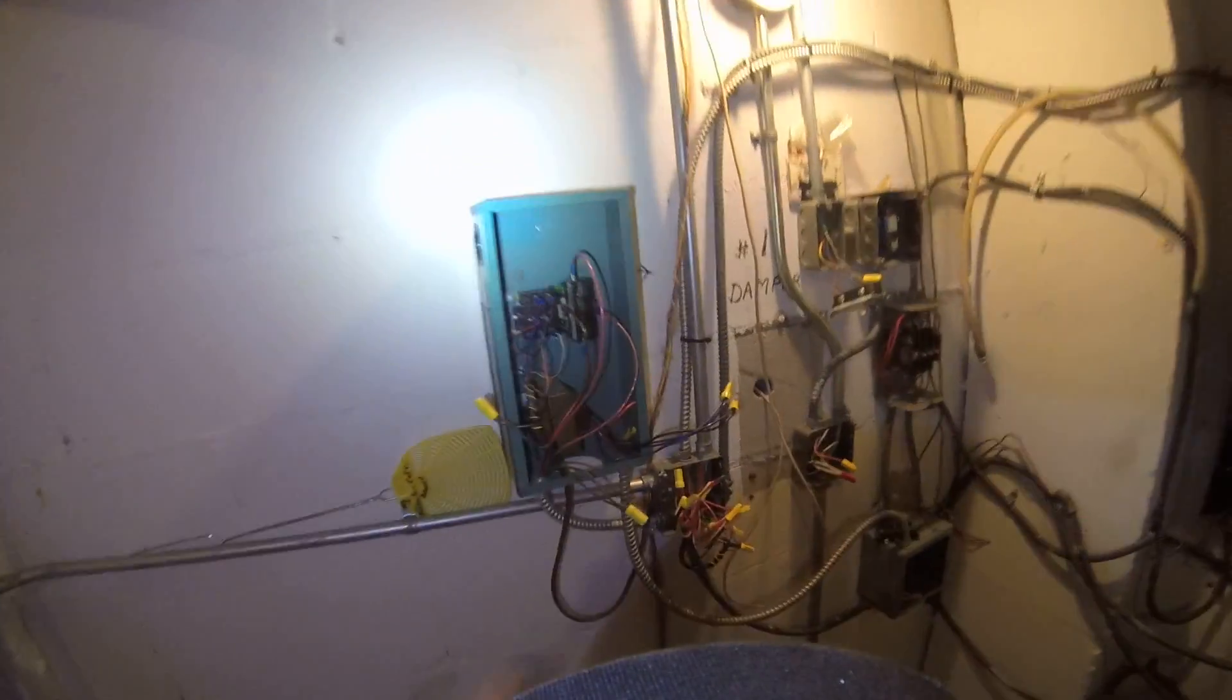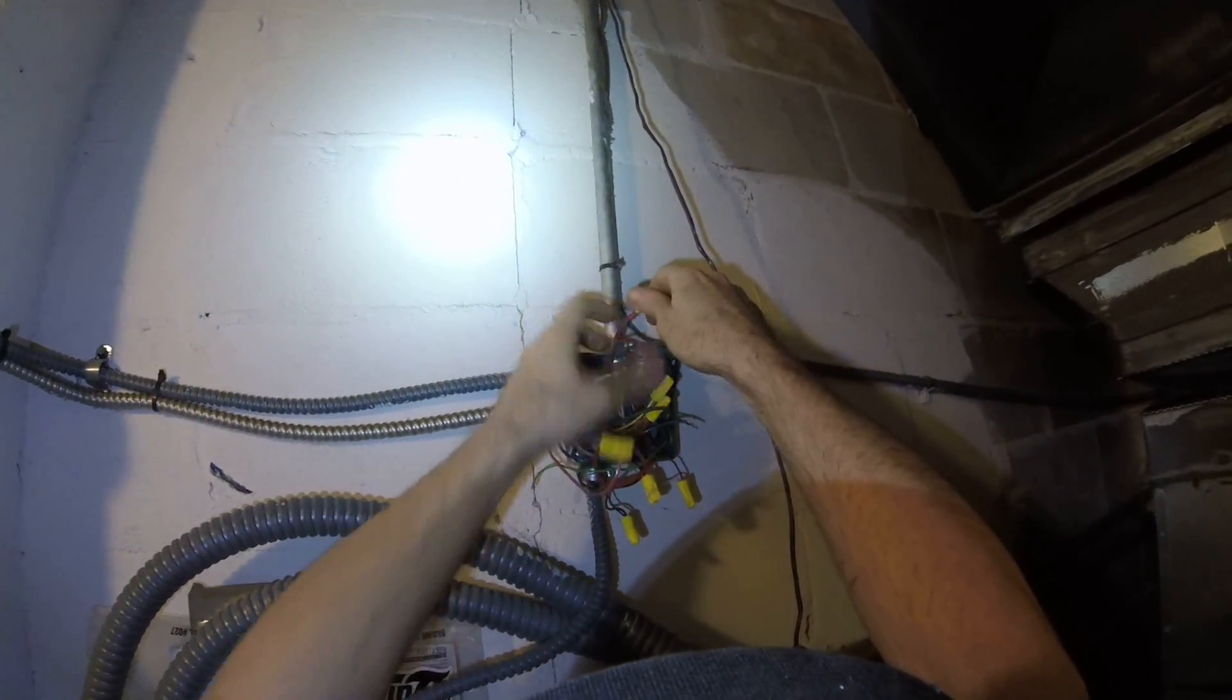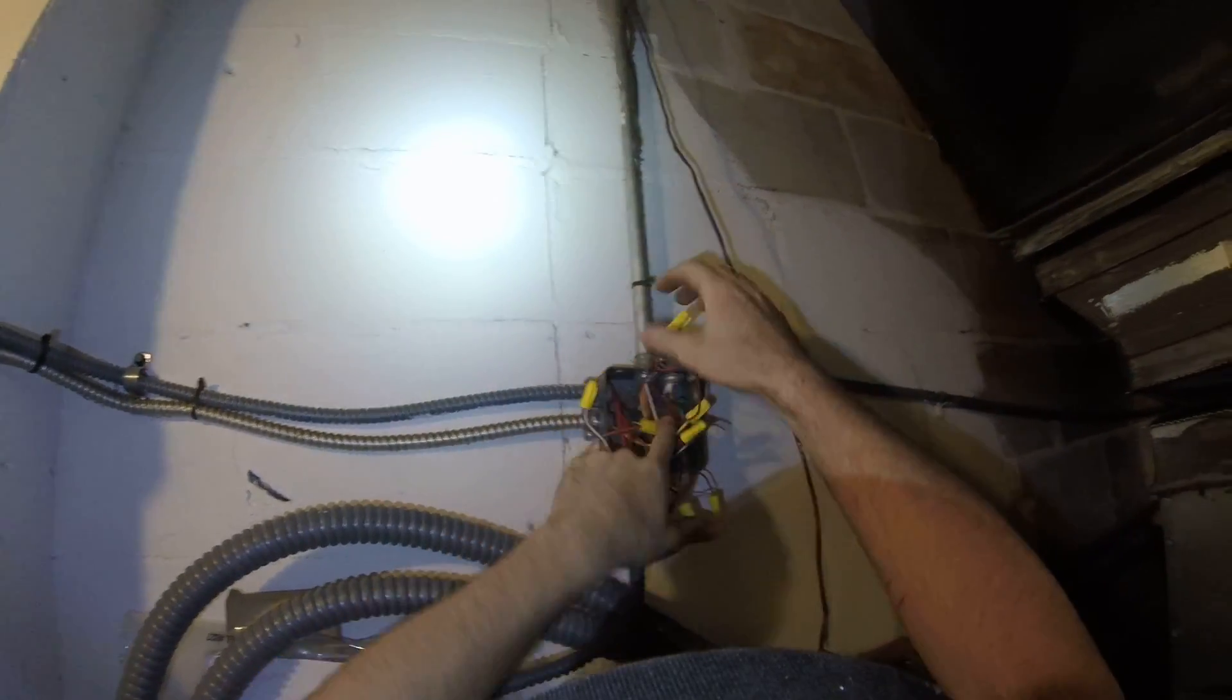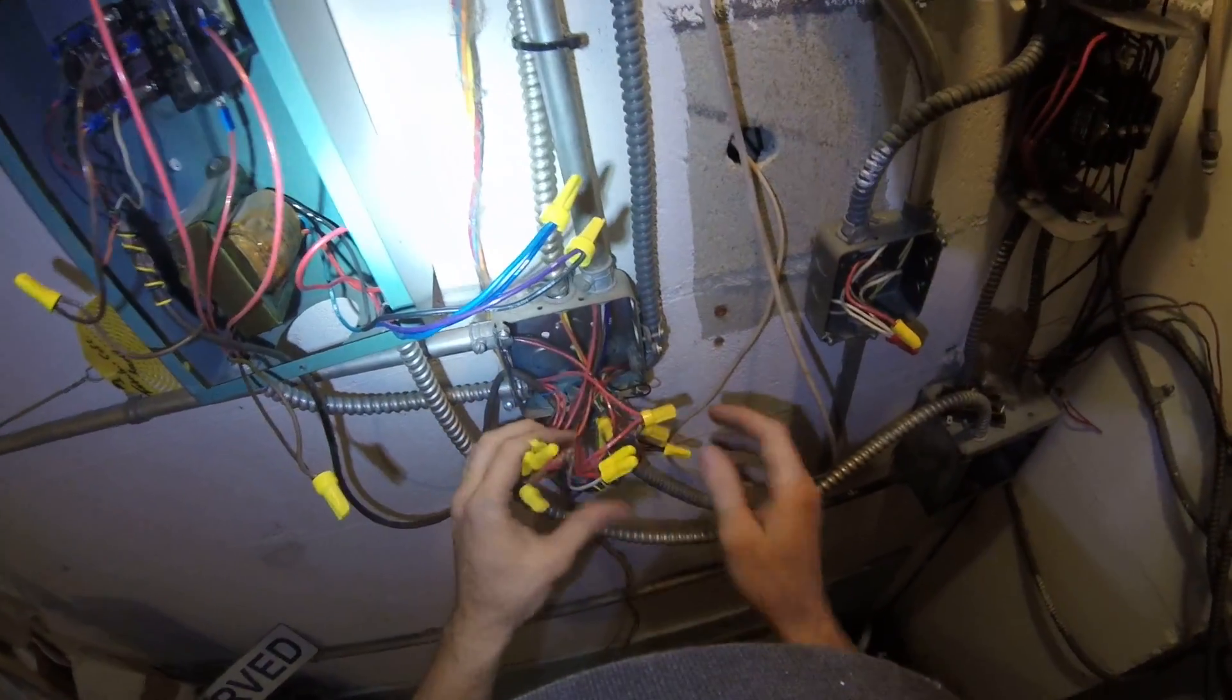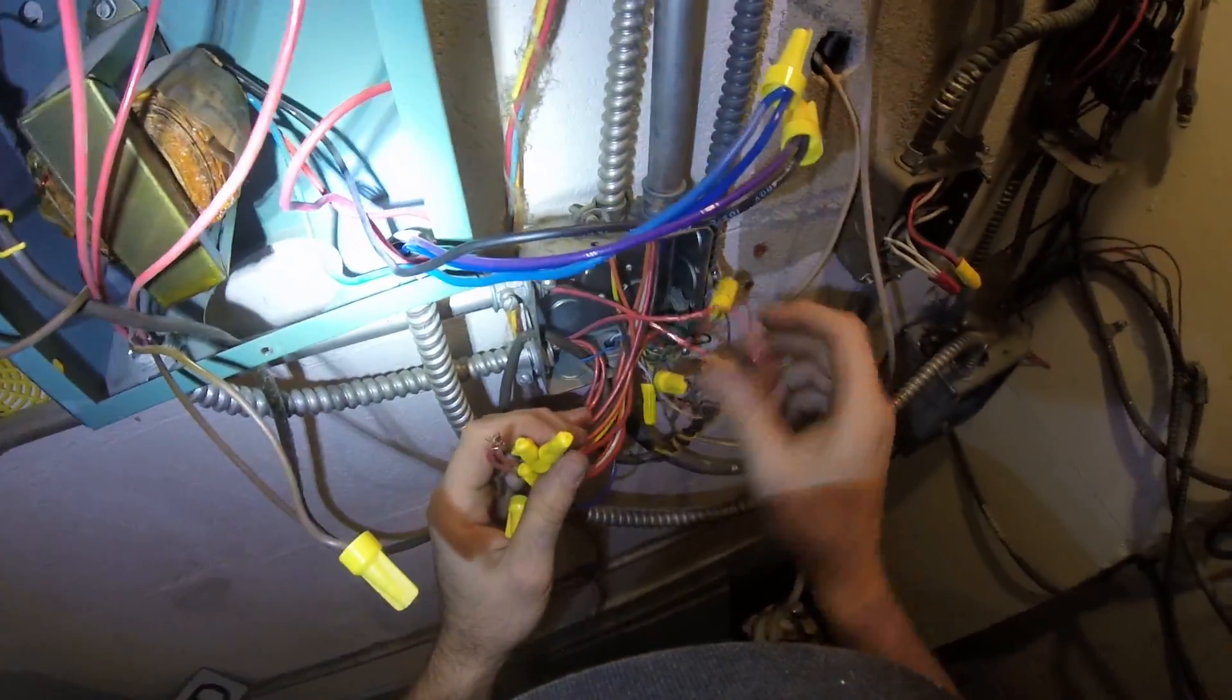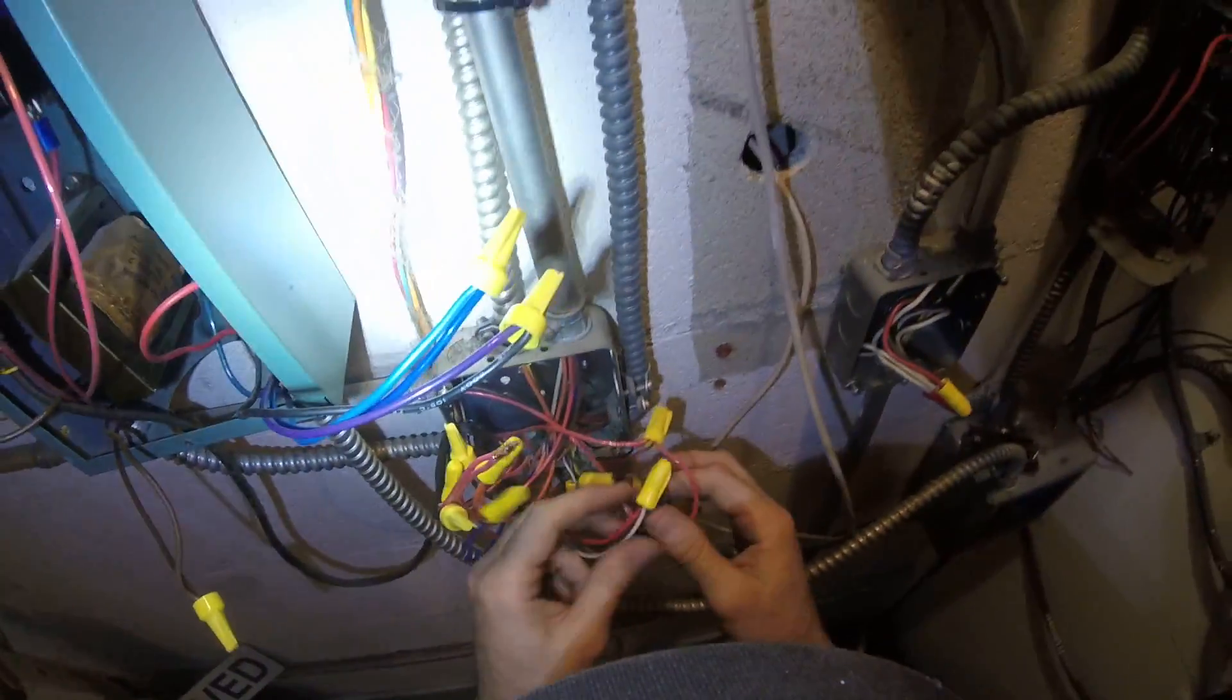Alright, so we got this figured out. This is red coming from the condenser, which the condenser had the transformer in it. This is red from the condenser, ties to red to this thermostat wire, which came to here.